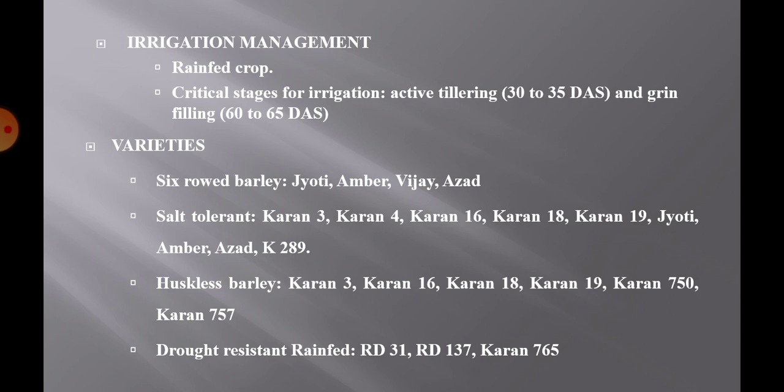Varieties: Six-row barley varieties include Jyoti, Ambar, Vijay, and Azad. Salt tolerant varieties include Karan 3, Karan 4, and the Karan series — Karan 16, 18, and 19 — along with Jyoti, Ambar, Azad, and K 289. Huskless barley varieties include Karan 3, Karan 16, Karan 18, Karan 19, Karan 750, and Karan 757. Drought resistant rain-fed varieties include RD 31, RD 137, Karan 7, and Karan 65.